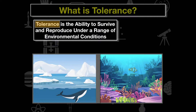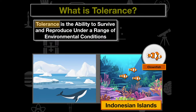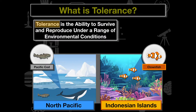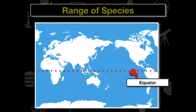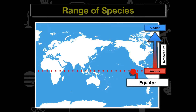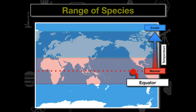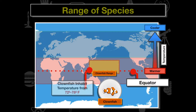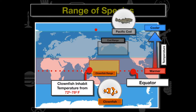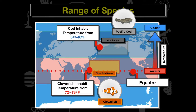If we look at two different types of fish — clownfish in the Indonesian islands and pacific cod at the poles in the north Pacific — we can compare their tolerances. Closer to the equator we see warmer temperatures, and as we move toward the poles we see cooler temperatures. Clownfish inhabit temperature ranges from about 72 to 78 degrees Fahrenheit, while pacific cod inhabit temperatures of 34 to 48 degrees Fahrenheit, so significantly cooler.